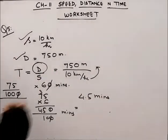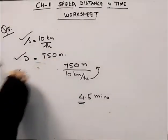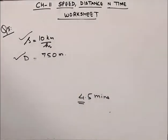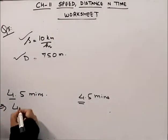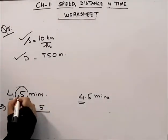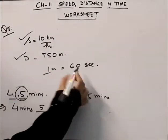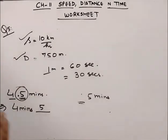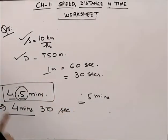We can simplify 4.5 minutes further. 4 minutes is the whole number part. The 0.5 minutes is half a minute. Since 1 minute has 60 seconds, 0.5 minutes equals 30 seconds. So the final answer is 4 minutes and 30 seconds.